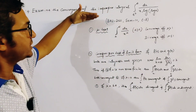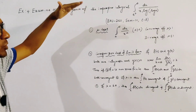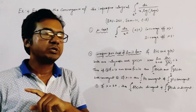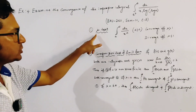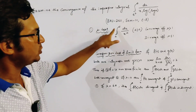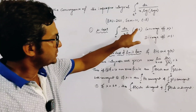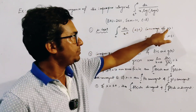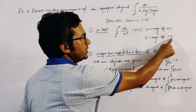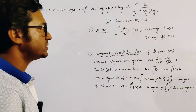To check the convergence of this improper integration, we use two very important results. The first one is the μ-test, which states that the integral from a to infinity of dx over x to the power μ is convergent if and only if μ is greater than 1, and divergent if and only if μ is less than or equal to 1, where a must be greater than 0.